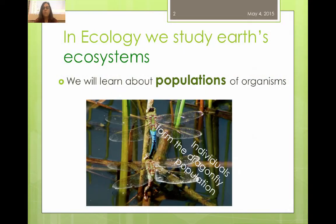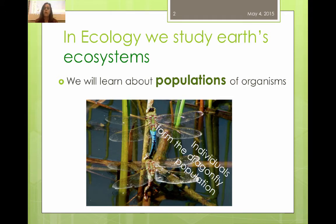In ecology we're really focused on studying the earth's populations of organisms. A population is a group of organisms that live in a particular area, all of the same species. We're really interested in what happens to these population numbers as they interact with different things in the environment, both living — which we use the word biotic to refer to living — and non-living, which we use the term abiotic to refer to non-living factors.